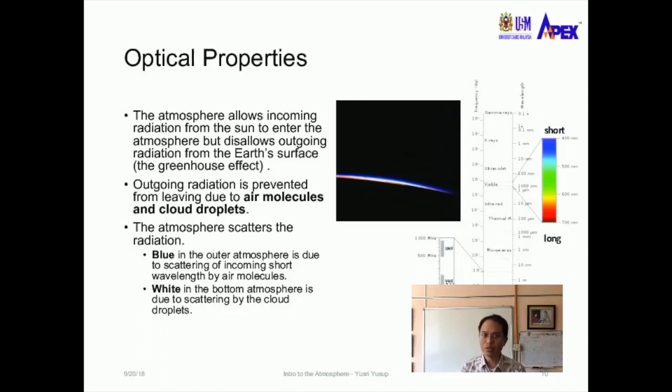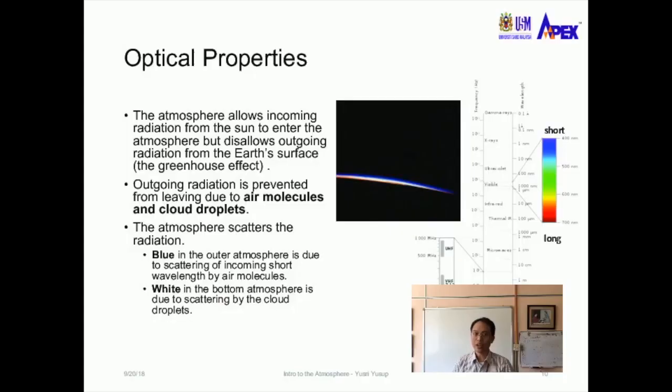The atmosphere scatters the radiation. The light that comes from the Sun enters the atmosphere and because of these molecules it scatters the radiation. Based on the thickness or the gases that exist in the atmosphere, it would scatter the white light into many different colors. The blue in the outer atmosphere is due to the scattering of incoming short wavelength by air molecules at the top of the atmosphere.